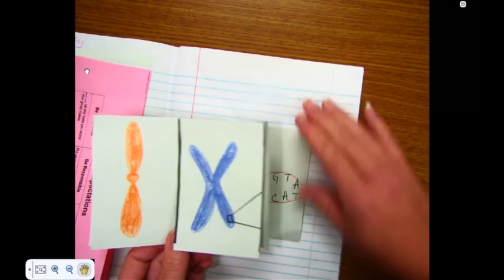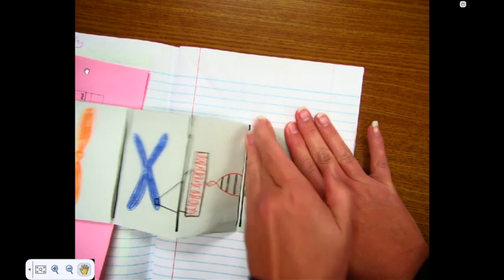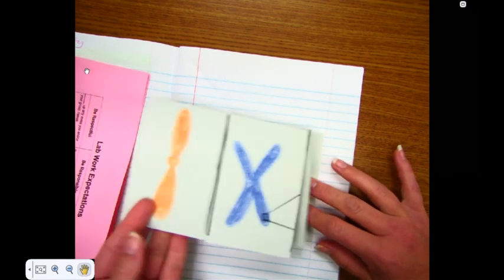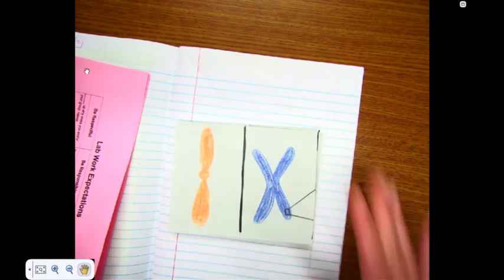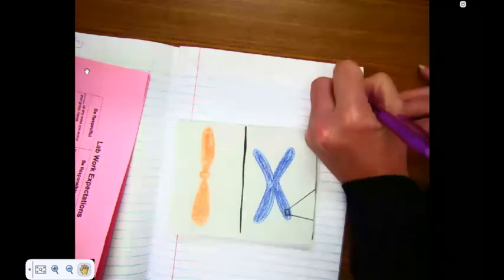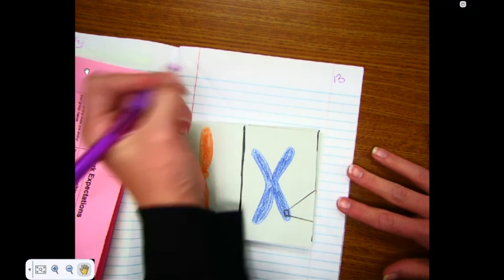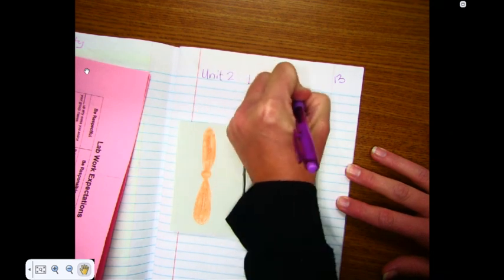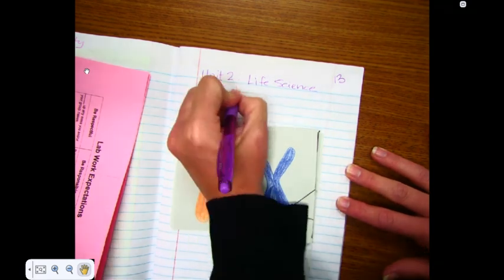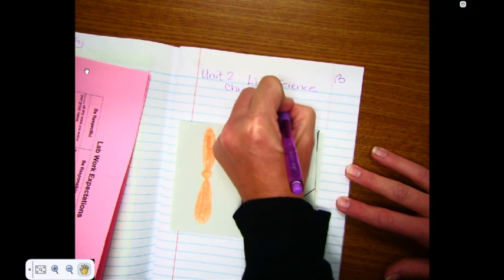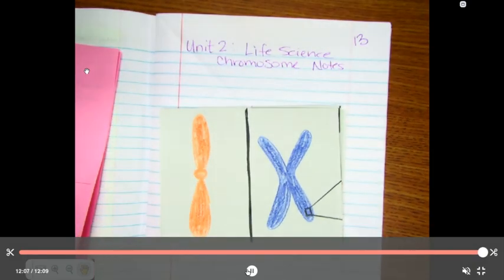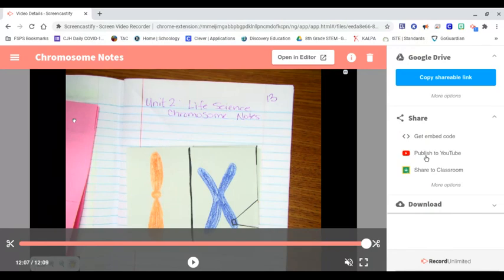And that's the side that you will lay in your notebook. See, just that side has glue on it, nothing else. Then when you close up your notebook, you can open them and lift the little tabs to get the information. This will be page 13 in your notebook. We are starting Unit 2, Life Science, and these are your chromosome notes. And I'll see you next time.